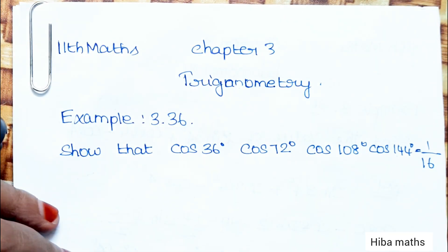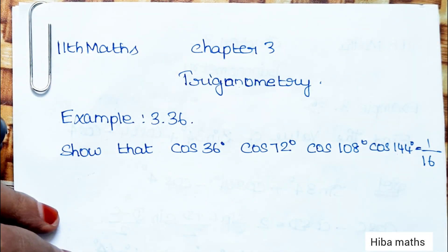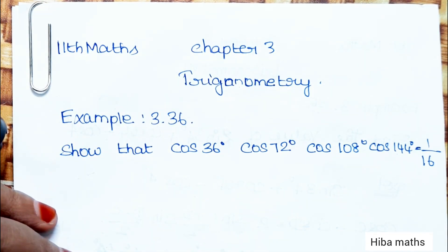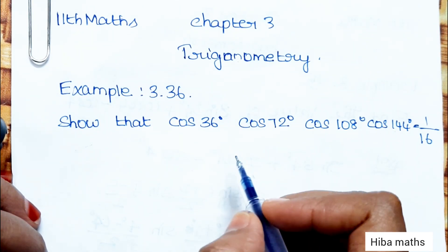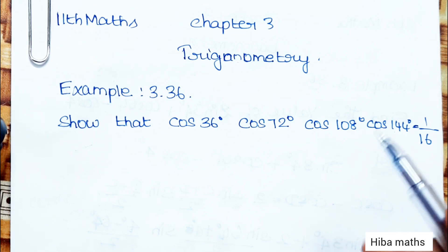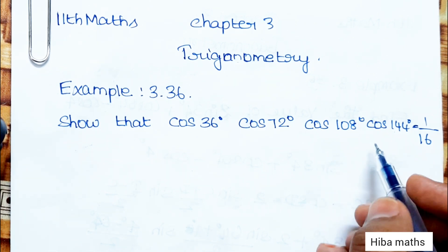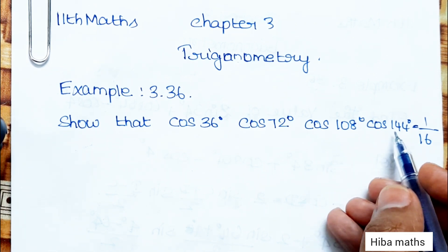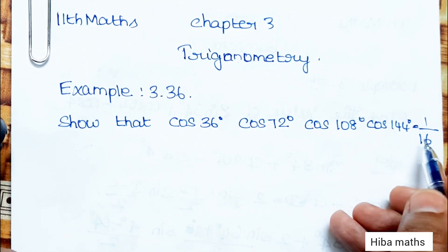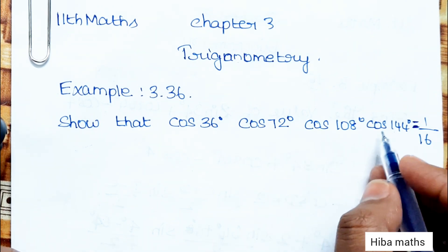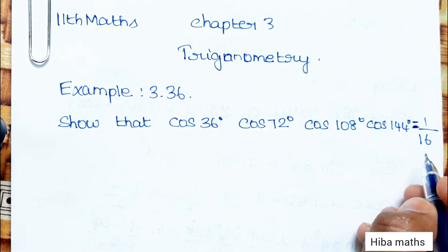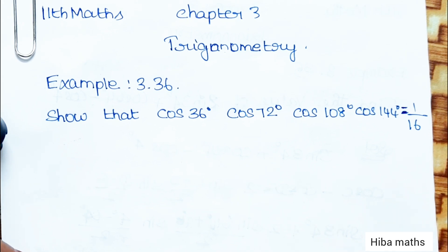Hello students, welcome to Heba Max 11th standard, Chapter 3 Trigonometry, Example 3.36. The question is: show that cos 36° · cos 72° · cos 108° · cos 144° is equal to 1/16. If we solve all these values, we can prove 1/16.